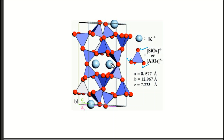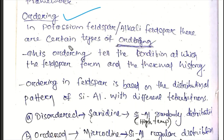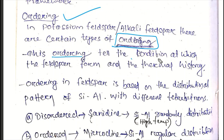The second position is occupied by positive cations: K, Na, Ca, etc. The ordering is related to potassium, alkali, and potassium feldspar. The arrangement is in order, and we have to consider the same condition.